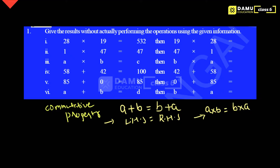This is commutative property under multiplication: a into b equals b into a. So if you multiply 28 into 19, you get 532. Changing places — 19 into 28 — the answer is still 532 only, because of commutative property under multiplication. Similarly, 1 into 47: just changing the place, 47 into 1, so this is also 47.